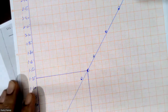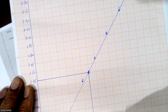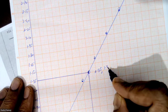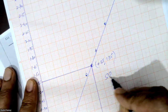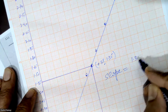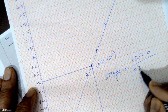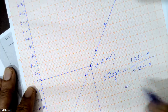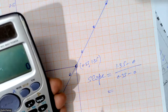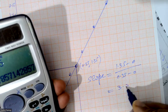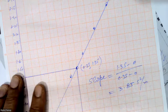Read two points on the line. Take a point that is more than halfway along the line — for example, at x = 0.35, y = 1.35. The other point is the origin (0, 0). Slope = (y₂ − y₁)/(x₂ − x₁) = (1.35 − 0)/(0.35 − 0) = 1.35 ÷ 0.35 = 3.85 s²/m.